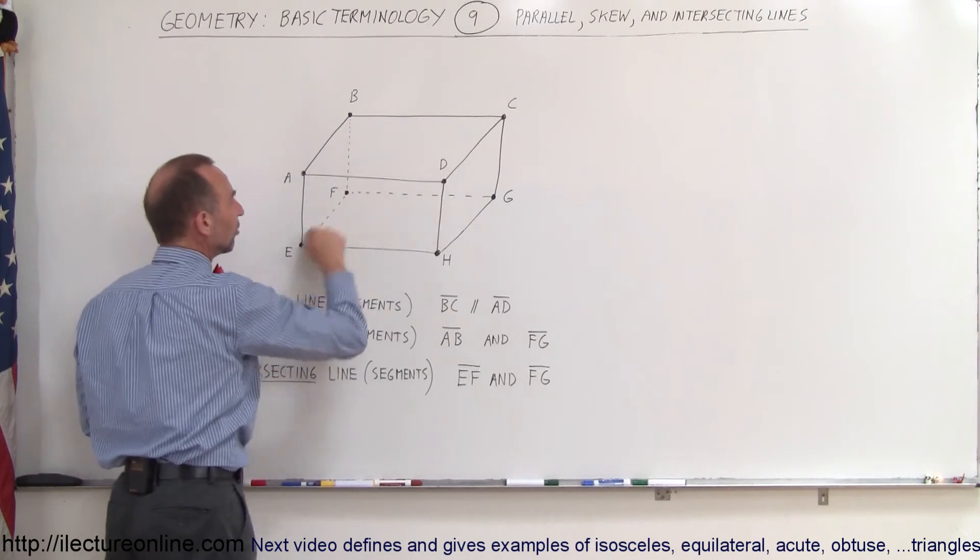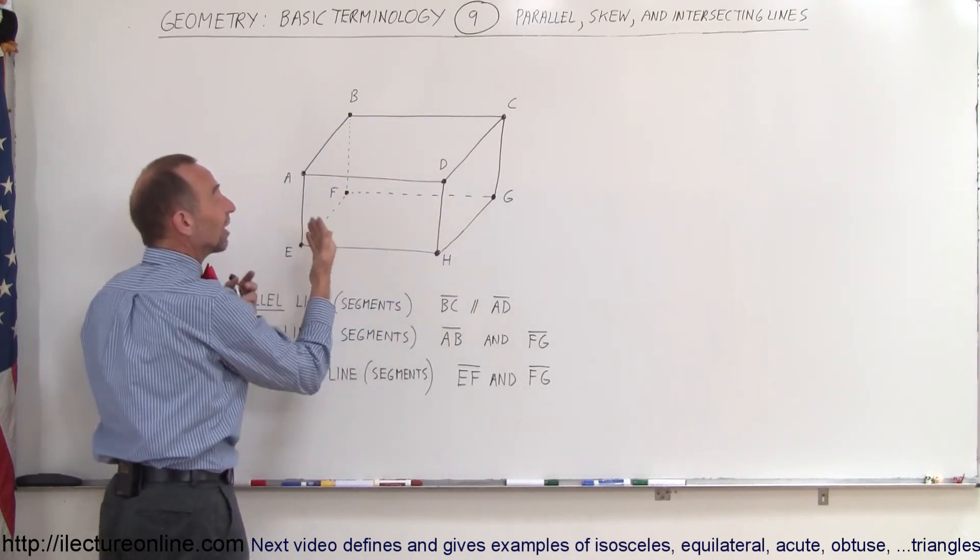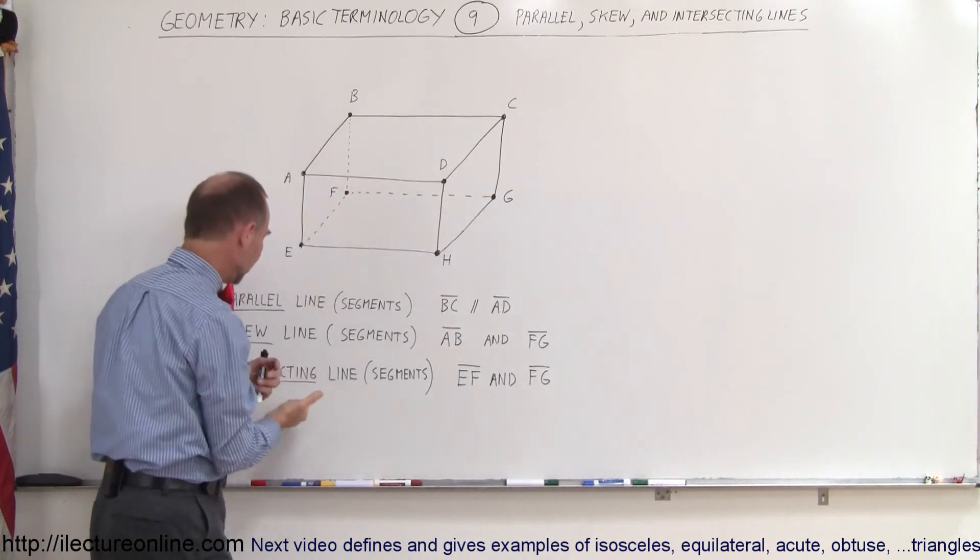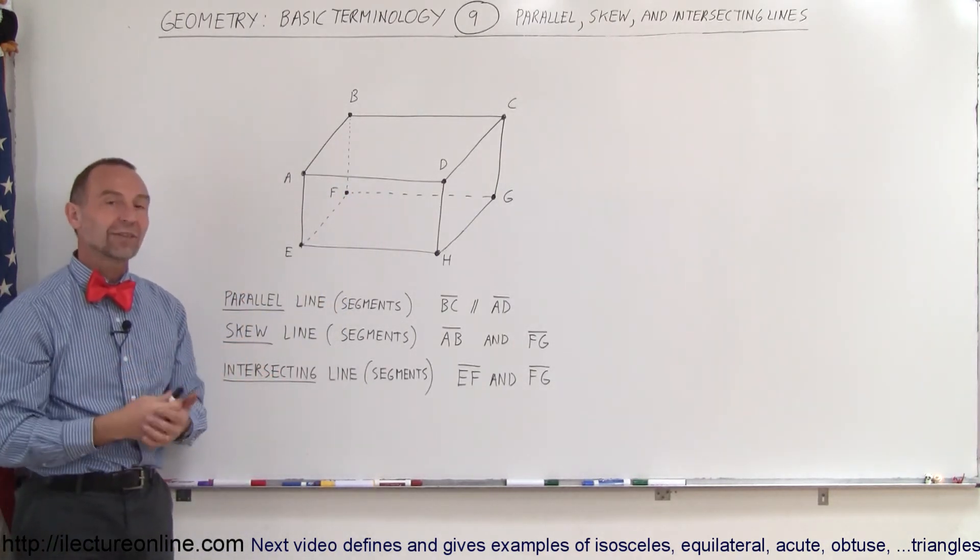Notice if we continue in both directions, the two line segments intersect at point F. Therefore, they're called intersecting lines or line segments.